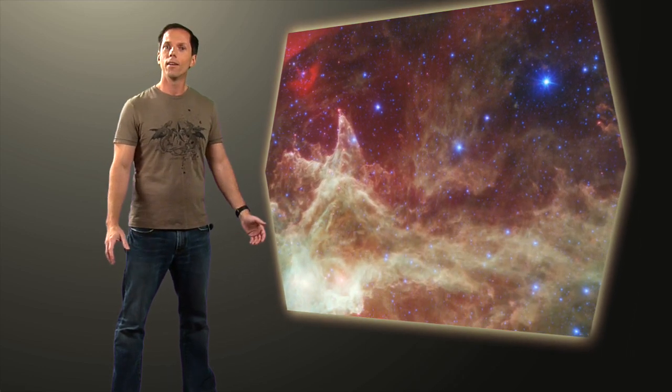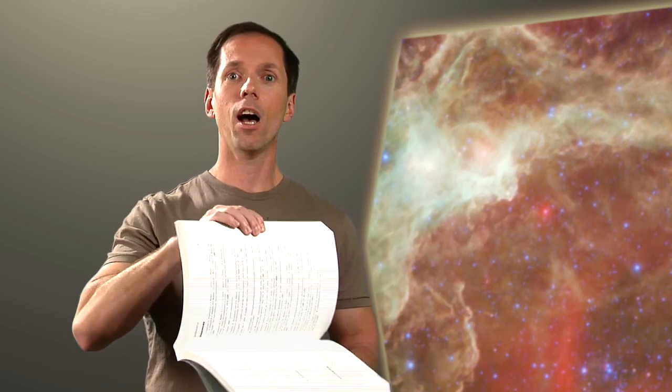But astronomers see this region known as W5 differently. Its strangely chaotic dust structures are like a work of art, but to astronomers W5 is more than just a picture. It's a graphic novel telling a story of how one generation of stars is helping the next to be born.